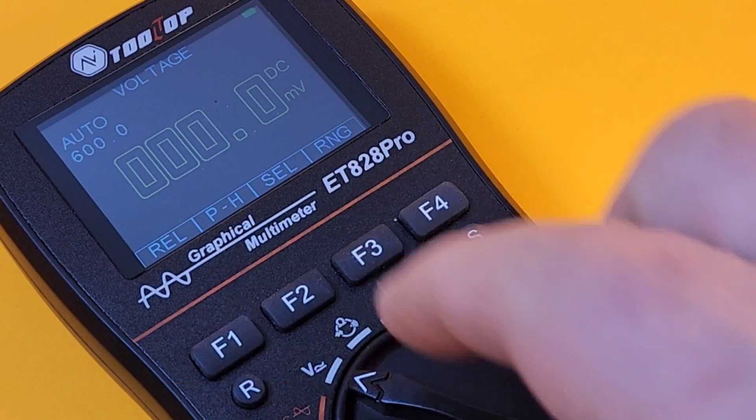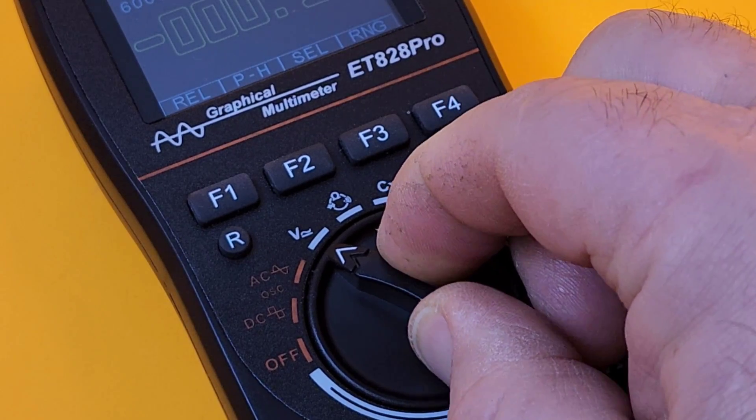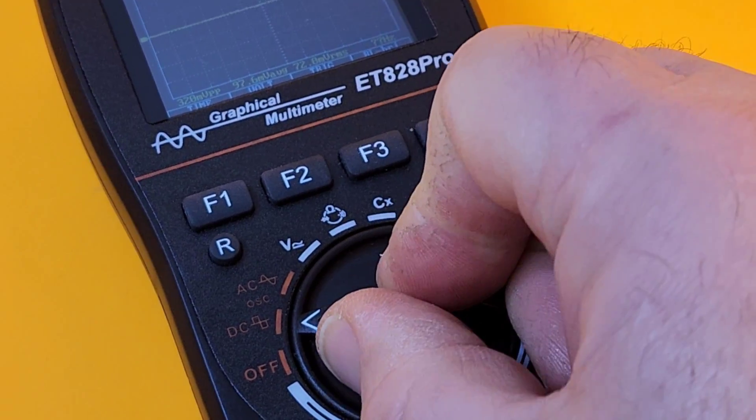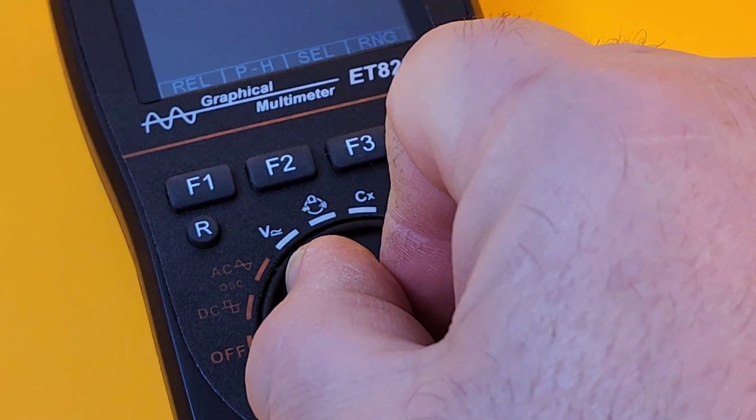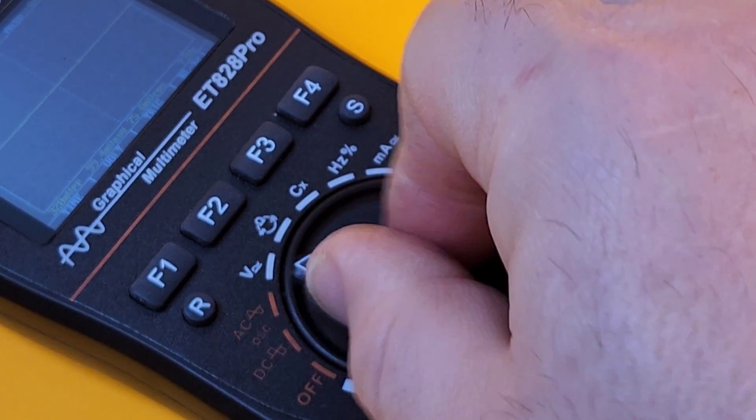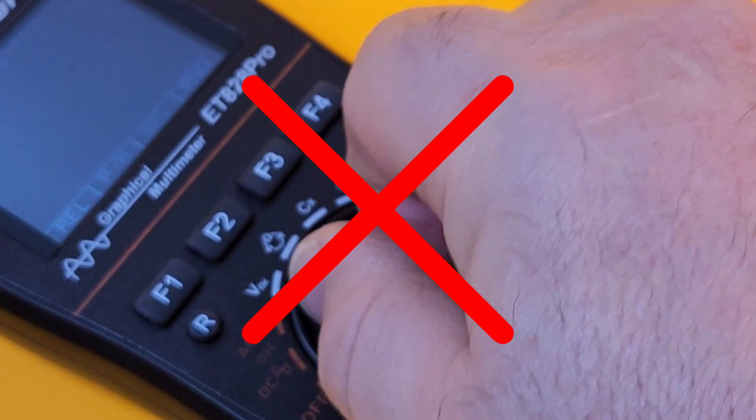One thing I'm not liking is this selector switch. It's almost impossible to one hand. It is so hard to move. It is nuts. Why, oh, why? You got to two hand this meter to get anywhere. And even then, it still might get lost between ranges.